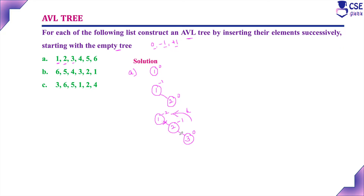AVL tree is nothing but a height-balanced binary search tree. It has to satisfy both the binary search tree property as well as the balance factor property. Now implementing a single left rotation, 2 will be the root node, 1 will be the left subtree, and 3 will be the right subtree. Now the tree is balanced. The balance factor here is 0, 0, 0.